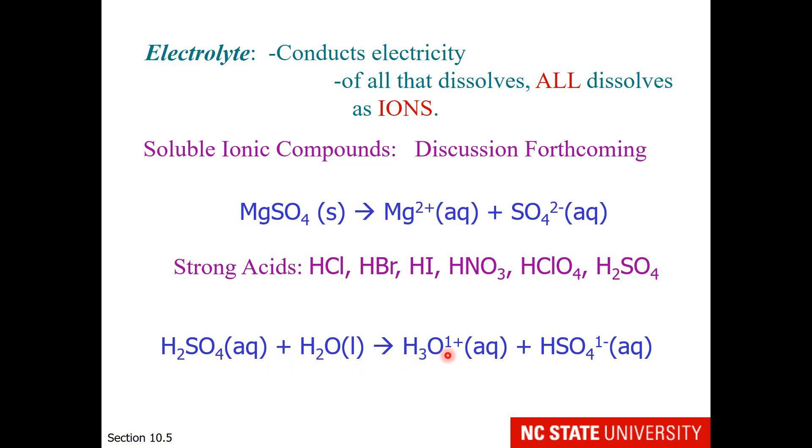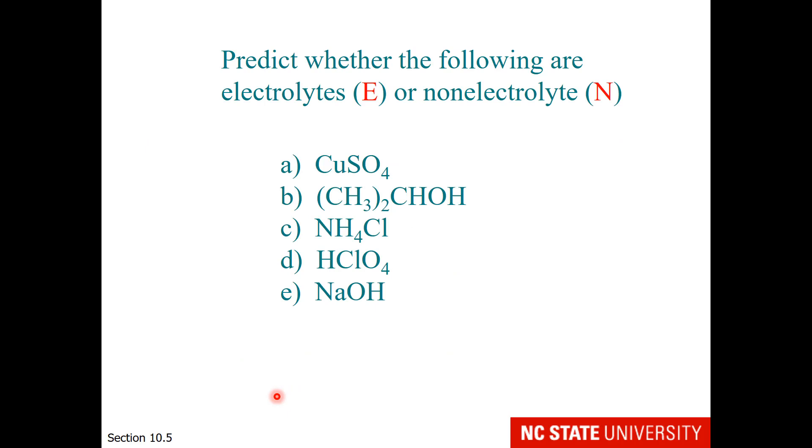Let's try a predictive exercise to determine whether the following are electrolytes or non-electrolytes. Electrolytes will be ionic materials and strong acids. Non-electrolytes will be molecular materials. Copper sulfate. Hopefully you recognize this as an ionic material and therefore an electrolyte.